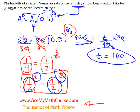Great. So it takes 180 days for the substance to go from 80 pounds down to 20 pounds.